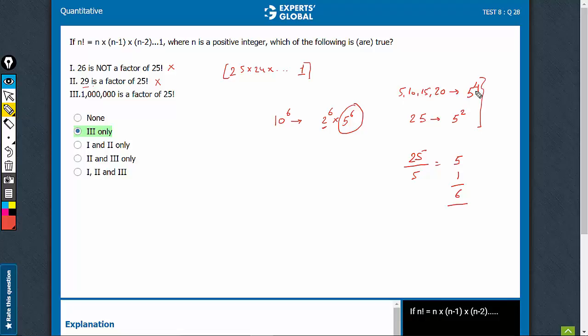1 million is going to be a factor of 25 factorial. The right answer choice here is option B.